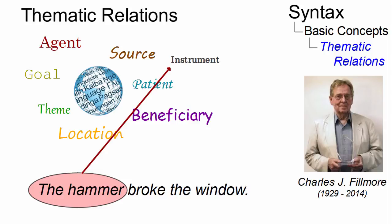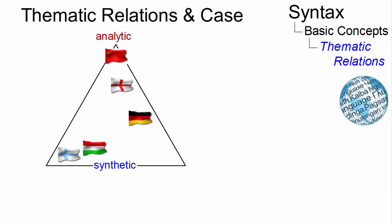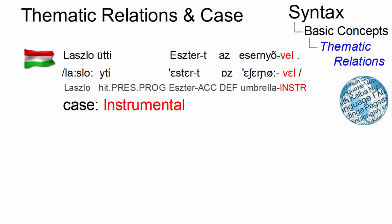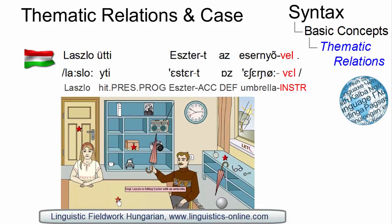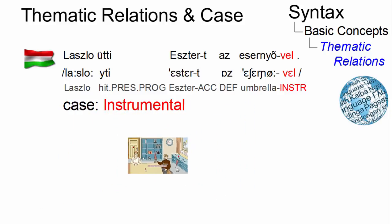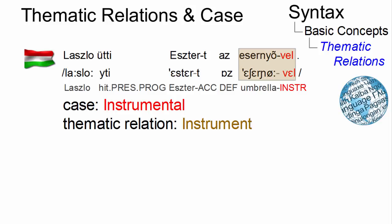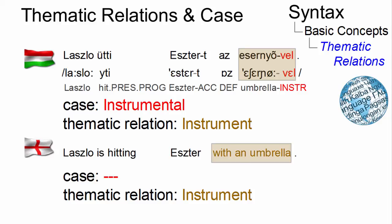In many synthetic languages, thematic relations may be reflected in case marking. For instance, Hungarian has an instrumental case ending — 'László üti Esztert az esernyővel' — and this case ending explicitly marks the instrument of a sentence. More analytic languages, like English by contrast, often mark such thematic relations with prepositions.